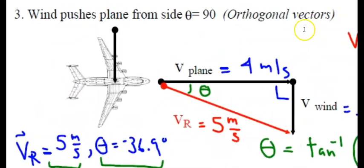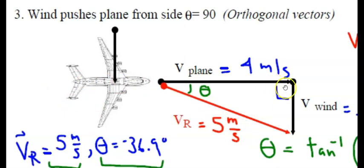In this third example I have a crosswind — this is where I have orthogonal vectors. I maintain the plane's velocity at four meters per second to the east, but now the wind is pushing across the plane from north to south, which is 90 degrees to the plane's direction. In the previous examples the wind either sped up or slowed down the plane, but here we have a crosswind perfectly at 90 degrees, which makes the mathematics easy — we can use the Pythagorean theorem.